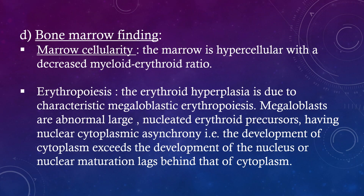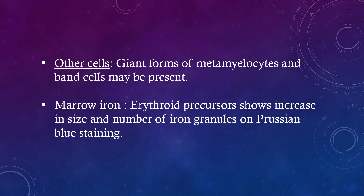Bone marrow findings. Marrow cellularity: the marrow is hypercellular with a decreased myeloid to erythroid ratio. Erythropoiesis: erythroid hyperplasia is due to catastrophic megaloblastic erythropoiesis. Megaloblasts are abnormally large. Nucleated erythroid precursors have nuclear-cytoplasmic asynchrony — that is, the development of cytoplasm exceeds the development of the nucleus, or nuclear maturation lags behind the cytoplasm. Giant forms of metamyelocytes and band cells may be present. Marrow iron: erythroid precursors show increase in size and number of iron granules on Prussian blue staining.